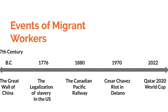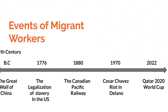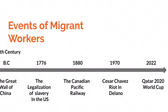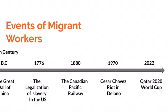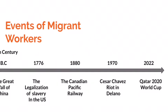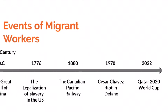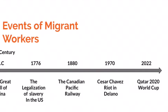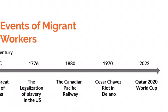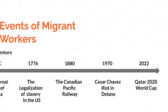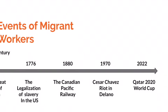Events and buildings that migrant workers were a big part of include the Great Wall of China, constructed in the 7th century BC; the legalization of slavery in the U.S. in 1776; the Canadian Pacific Railway in 1880; the Cesar Chavez Riot in Delano, California; and the Qatar 2022 World Cup.